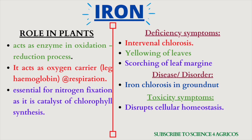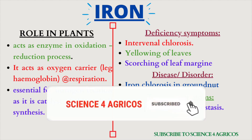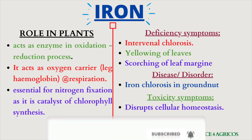Now let's learn about iron. Iron acts as an enzyme in oxidation-reduction processes and as an oxygen carrier in respiration. It is essential for nitrogen fixation and acts as a catalyst for chlorophyll synthesis. Deficiency symptoms are interveinal chlorosis, yellowing of leaves, and scorching of leaf margins. The disorder is iron chlorosis in groundnut. Toxicity: excess of iron disrupts cellular homeostasis.